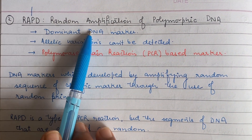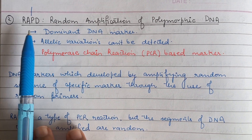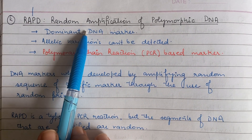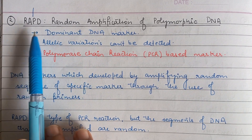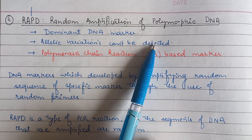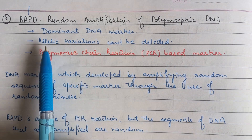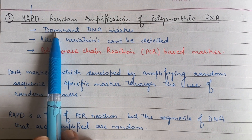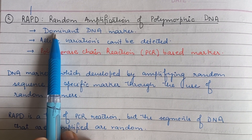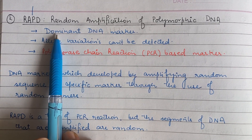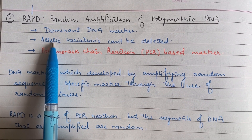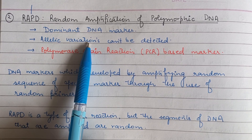RAPD is a dominant marker, which means that only one parent can transfer its marker to the first generation out of the two parents, due to which the allelic variations cannot be detected. So only the dominant marker is expressed while the other one is not passed on to the first generation, and we cannot detect allelic variations.